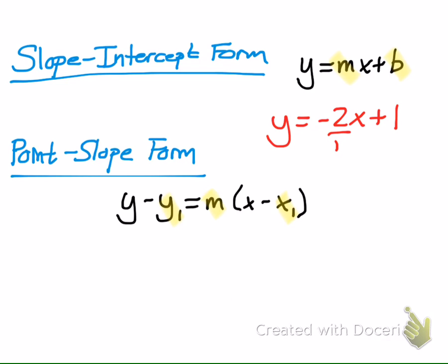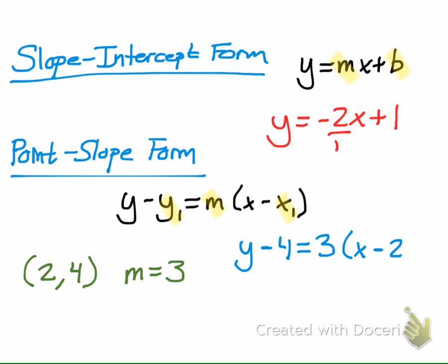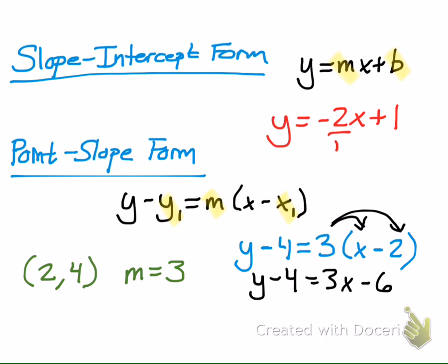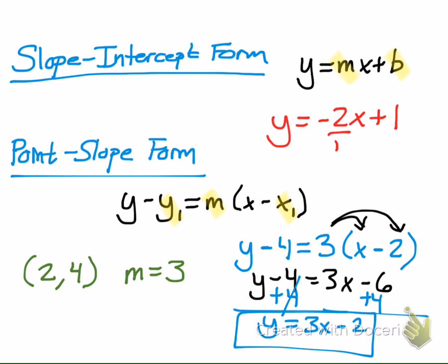For example, give me the equation in point-slope form of a line that goes through (2, 4) with a slope of 3. You take y minus the y-coordinate, which is 4, equals m, which is 3, times parenthesis x minus the x-coordinate, which is 2. To convert to slope-intercept form, distribute the 3: you get 3x minus 6. Then add 4 to both sides, giving y equals 3x minus 2. Now that's in slope-intercept form.